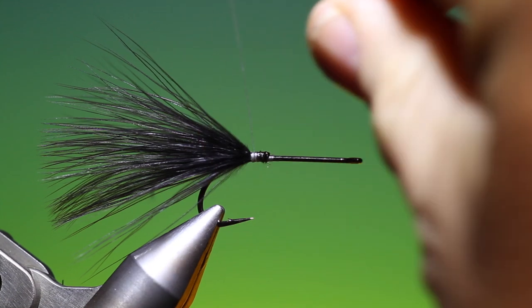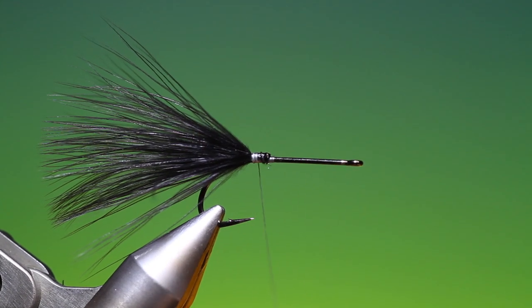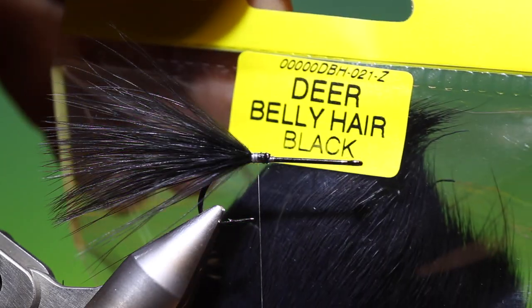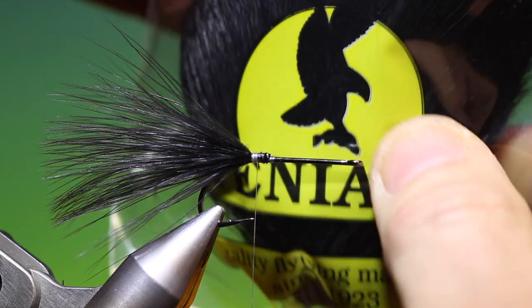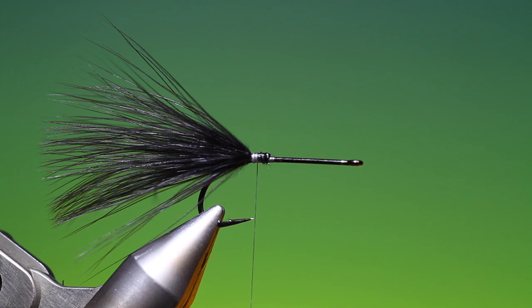A couple of turns and I want to spin my GSP thread anti-clockwise to flatten it. Then what we need is some black deer belly hair. This belly hair is much better for spinning.